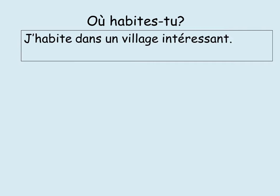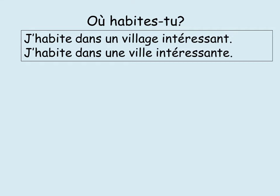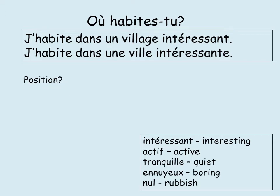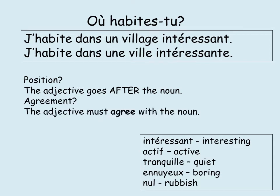Let's look at the sentences: J'habite dans un village intéressant and J'habite dans une ville intéressante. What is the difference? One ends in an E — intéressant versus intéressante — because one is masculine and one is feminine. The adjective goes after the noun, and it must agree with the noun. Think of a balance or scale — both sides must be equal.